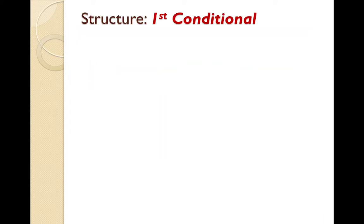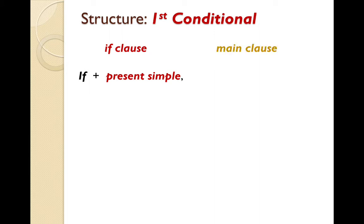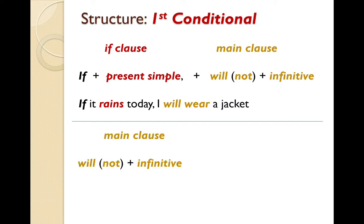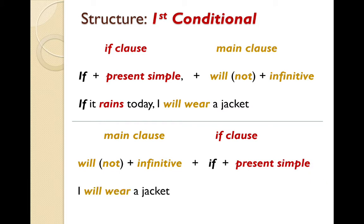Let's start by looking at the structure of the first conditional. In the if clause, we have 'if' plus the present simple tense, and in the main clause, 'will' or 'will not' plus the infinitive. For example: 'If it rains today, I will wear a jacket.' We can also reverse it and start with the main clause: 'I will wear a jacket if it rains today.'